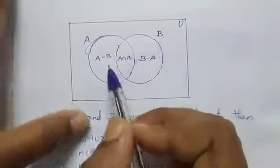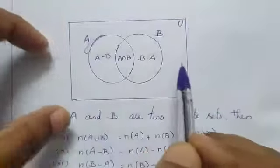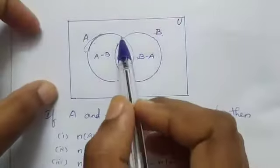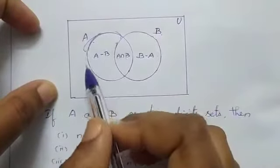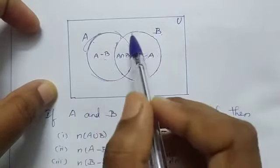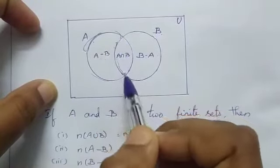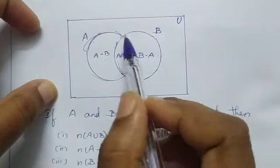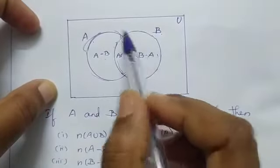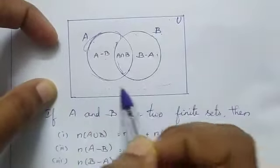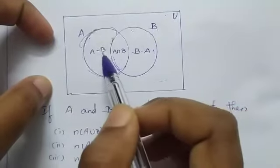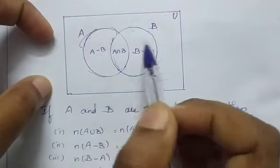See the diagram. Totally you have four parts. First part, this is only A difference B. This is A intersection B. This is B difference A. This is except A and B.